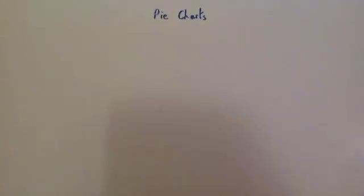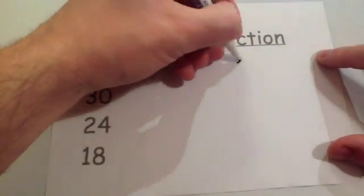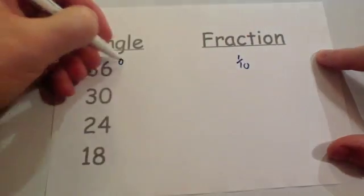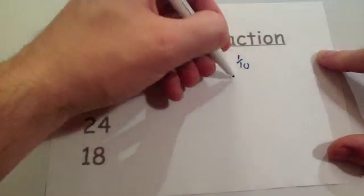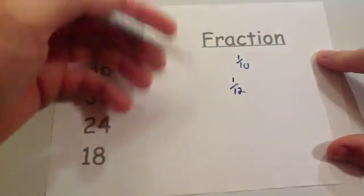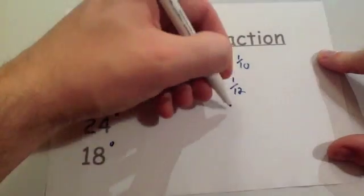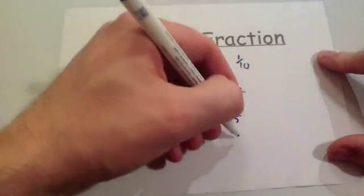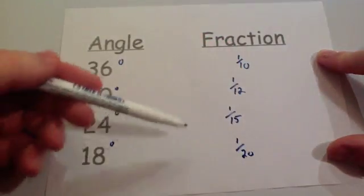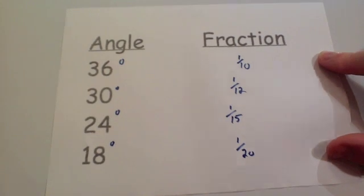Let's look at some more popular angles that would be useful to know. 36 degrees, if you use a similar method, that would be a tenth. 30 degrees. Well, 30 degrees goes into 360 twelve times, so that would be a twelfth, or if you can cancel it down. 24 degrees, if you use it, 24 degrees, that's a fifteenth. You'd have 360 degrees. And 18 degrees is a twentieth. Likewise, if you were to cancel down that fraction, you'd get a twentieth. So if you ever see any of those angles, then they're the fractions that they represent. It would make it much easier to do those questions.